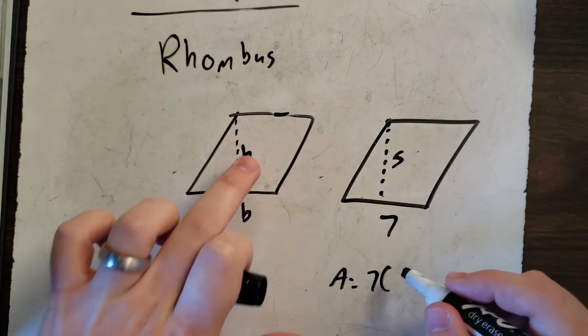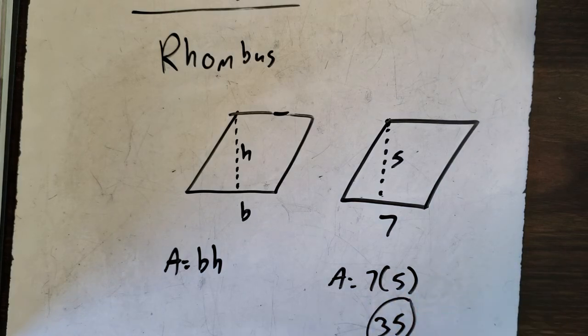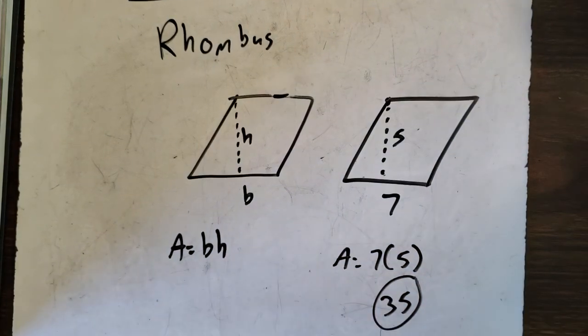Base seven times our height, five. Multiply them, thirty-five. Simple. Quick one.